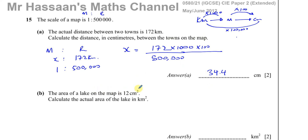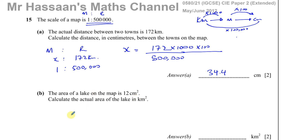Then it says the area of a lake on the map is 12 cm squared. Calculate the actual area of the lake. So now we're dealing with map scales and area, and we have to do something different. This scale of 1 to 500,000 refers to length. When dealing with map scales and area, we have to square the ratio of the lengths to give us the ratio of the areas. The map and the real place are similar figures — the map is just a scaled-down drawing of the actual place.